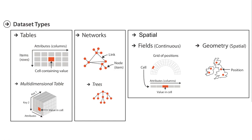Within tables, you'll encounter tables where rows represent a single item or event. This is typically called tabular data. You'll also encounter multidimensional tables or data cubes, and what makes them different is that they're actually aggregated data.